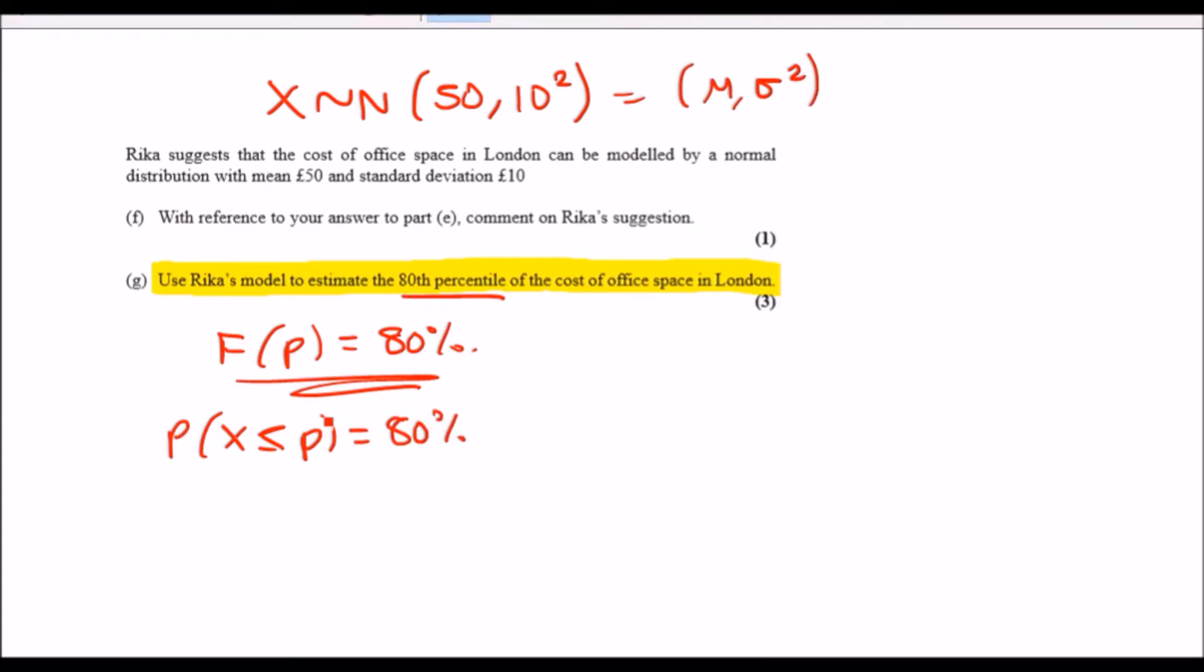The key idea here is to simply look at the table for an 80 percent value and then match it with the inside of this. But to do this, first let's rewrite this as the correct normal distribution format. So this would be the probability that z is less than or equal to (p minus the mean, which is 50) over the standard deviation, which is 10. And again, this equals 80 percent.